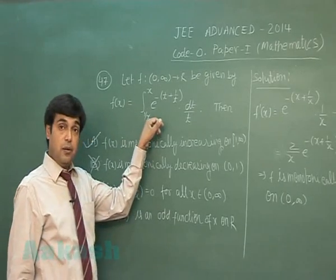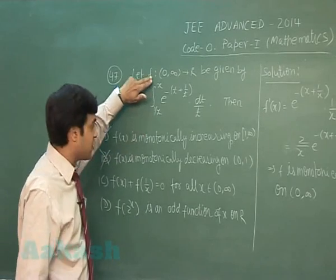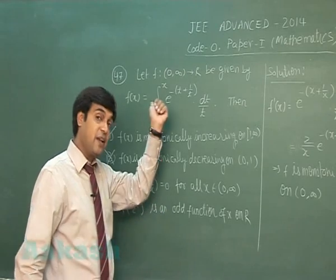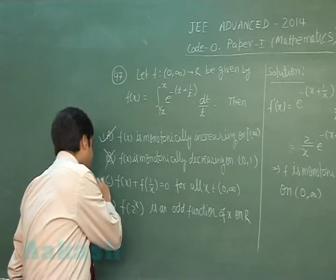f(x) is given. When I write f(1/x), it will give me integral x to 1/x. Only limits are interchanged. When we again change the limits, a negative sign is created. So on adding f(x) and f(1/x), it goes to 0.